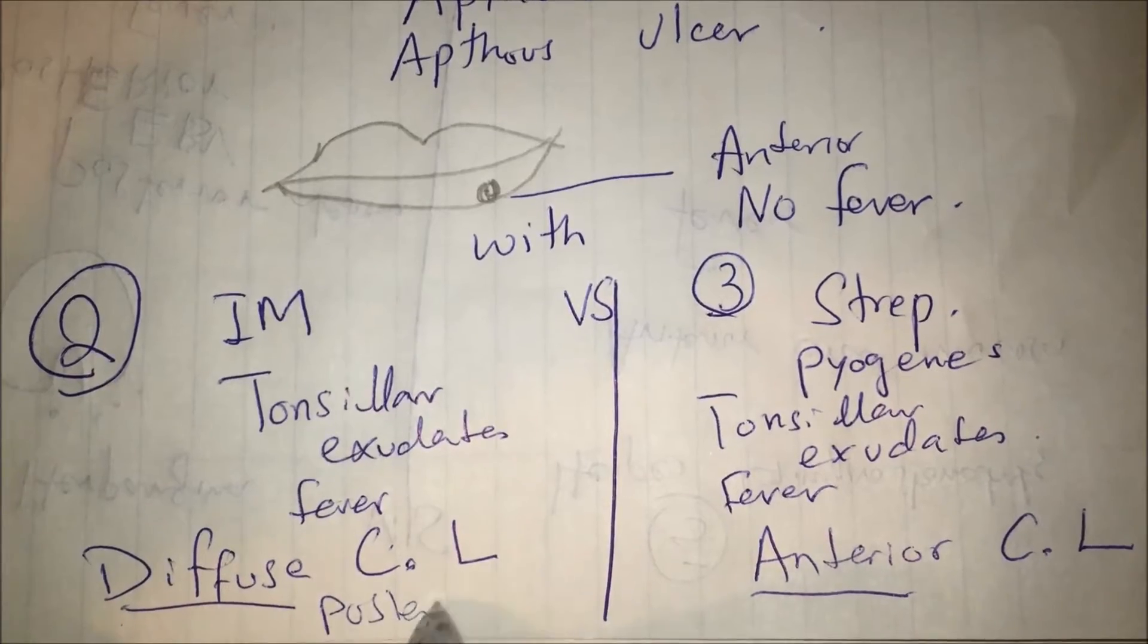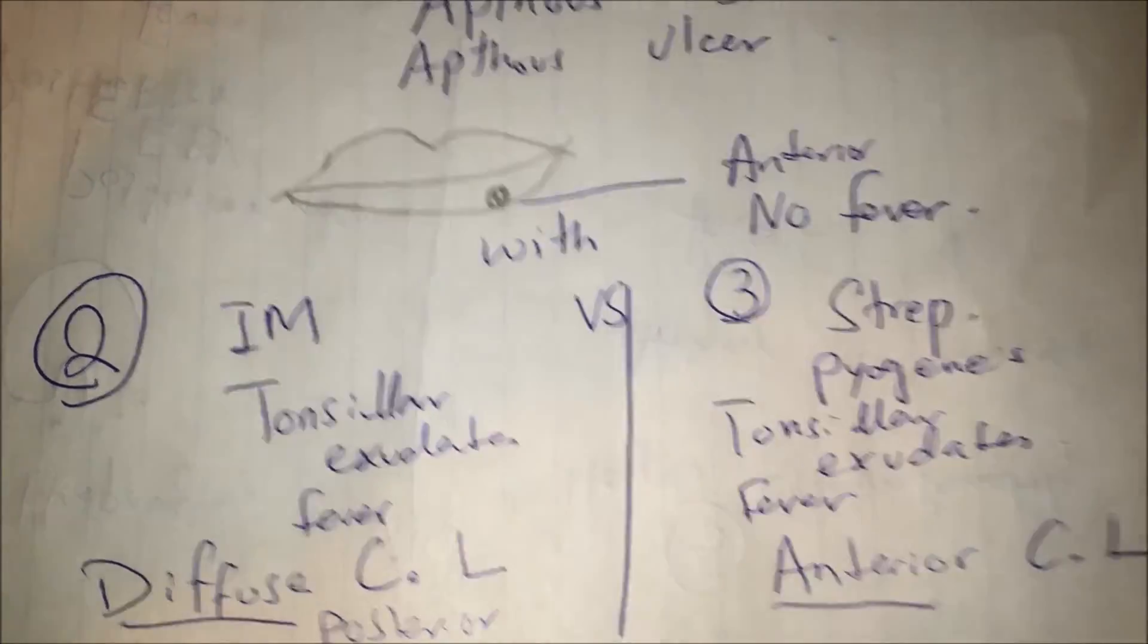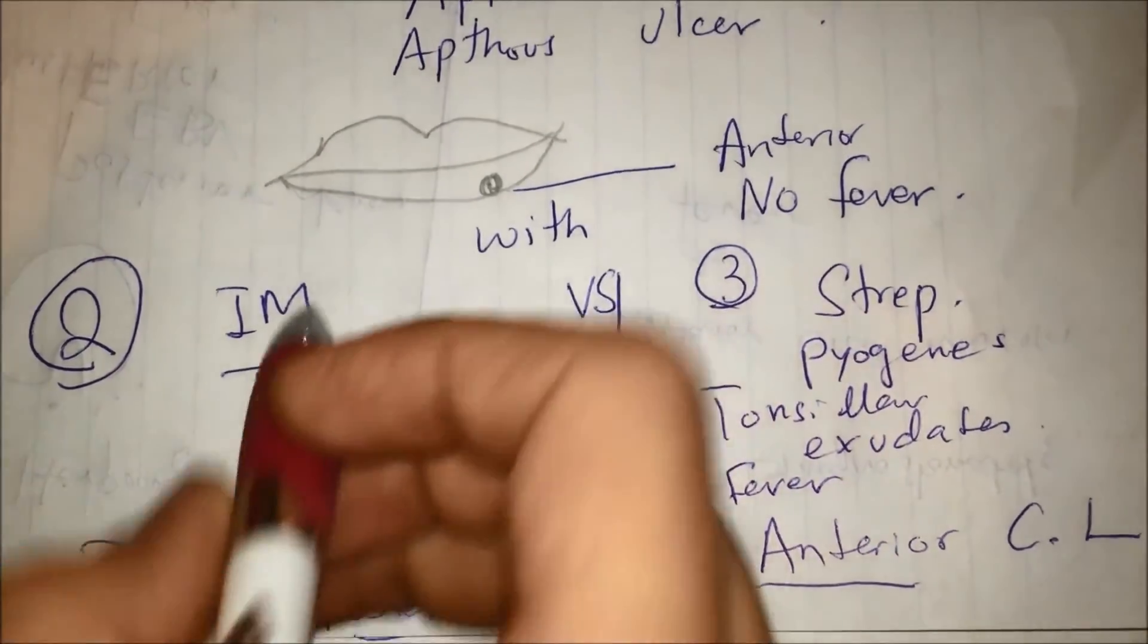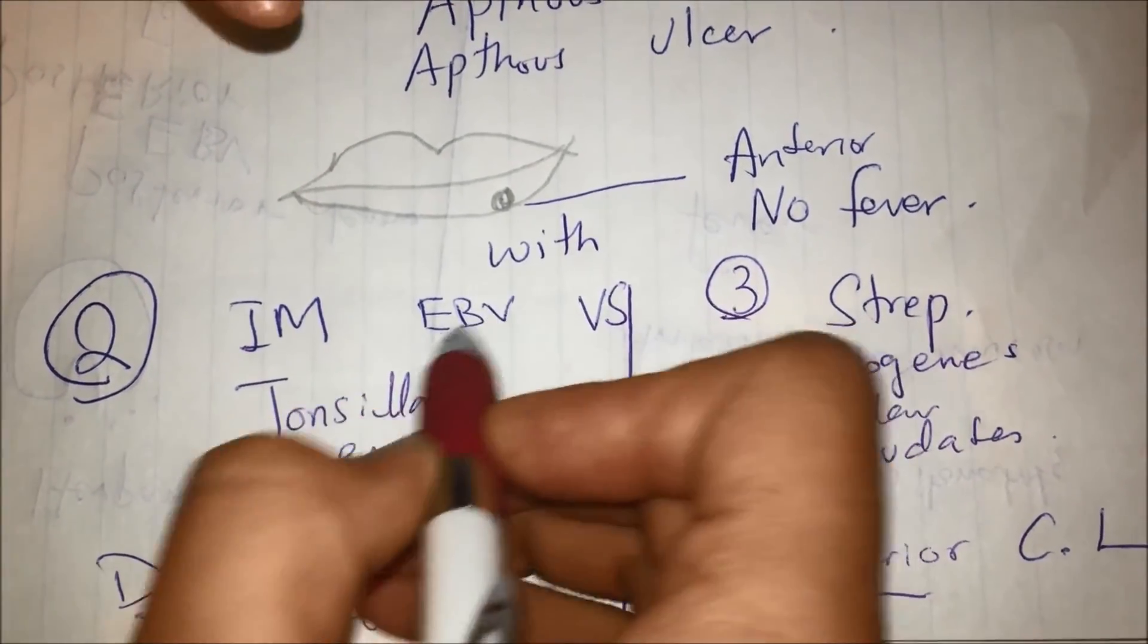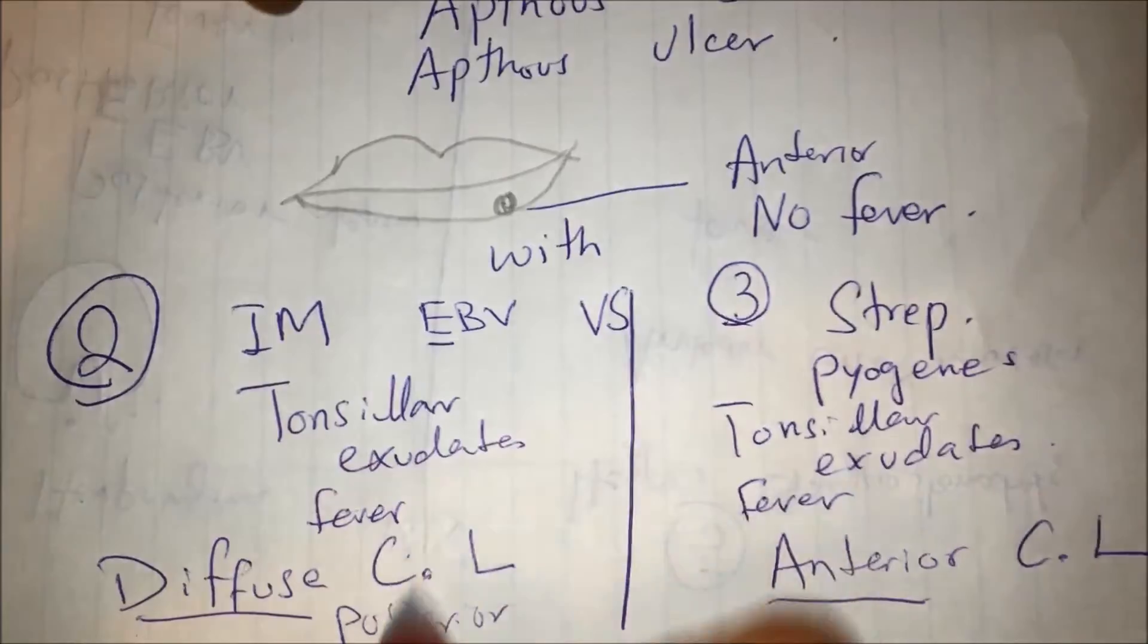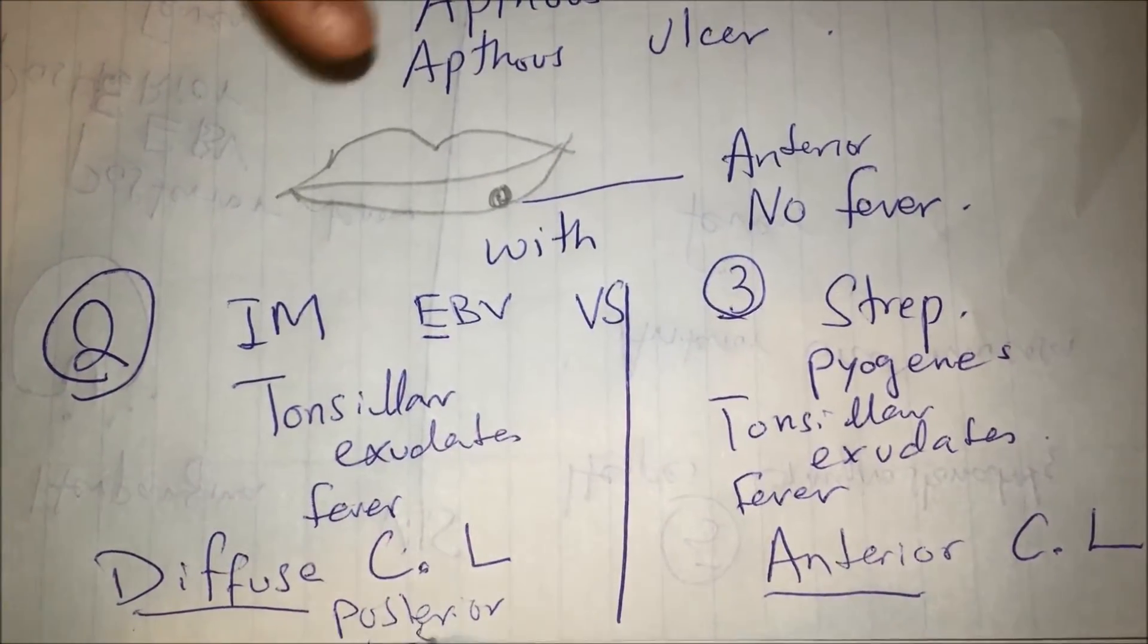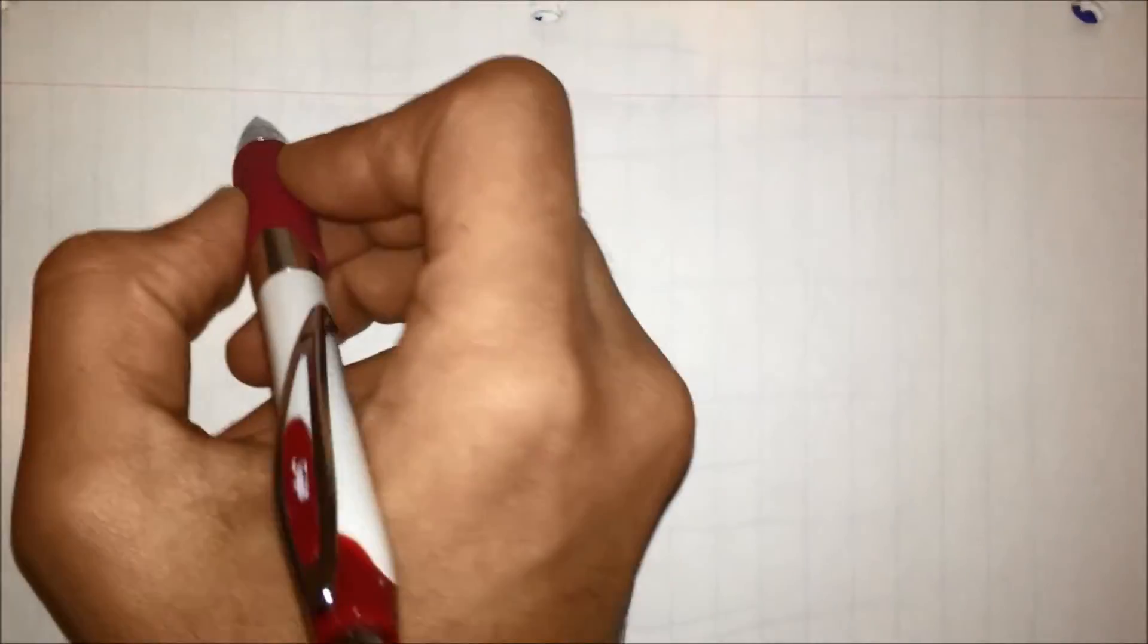In Infectious Mononucleosis, it's diffuse and posterior cervical lymphadenopathy because it has Epstein-Barr virus. So E is for posterior.